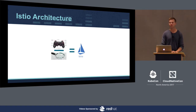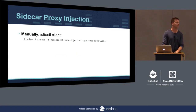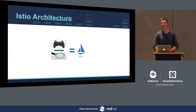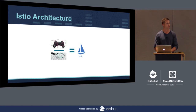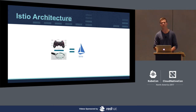Istio architecture. Istio is made up of a control plane and a data plane. The control plane consists of components called a Mixer, a Pilot, and the CA — also referenced as Istio security or Istio auth. The data plane consists of an enhanced version of the Envoy proxy.